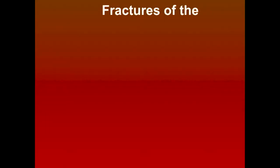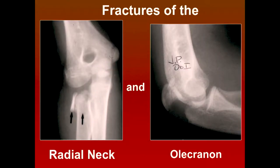Welcome again. This is another session. In this session we're going to concentrate on fractures of the radial neck and the olecranon. These are kind of small fractures, but they can have big problems associated with them. There's not a lot written about these fractures in the textbooks, so I thought I'd go over my experience with these and some of the problems that we've had.